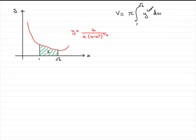Now if we take the curve y equals 4 over x bracket 4 minus x squared to the power of quarter and we square it, what we're going to end up with is that this integral becomes pi times the integral from 1 to root 2 of y squared.